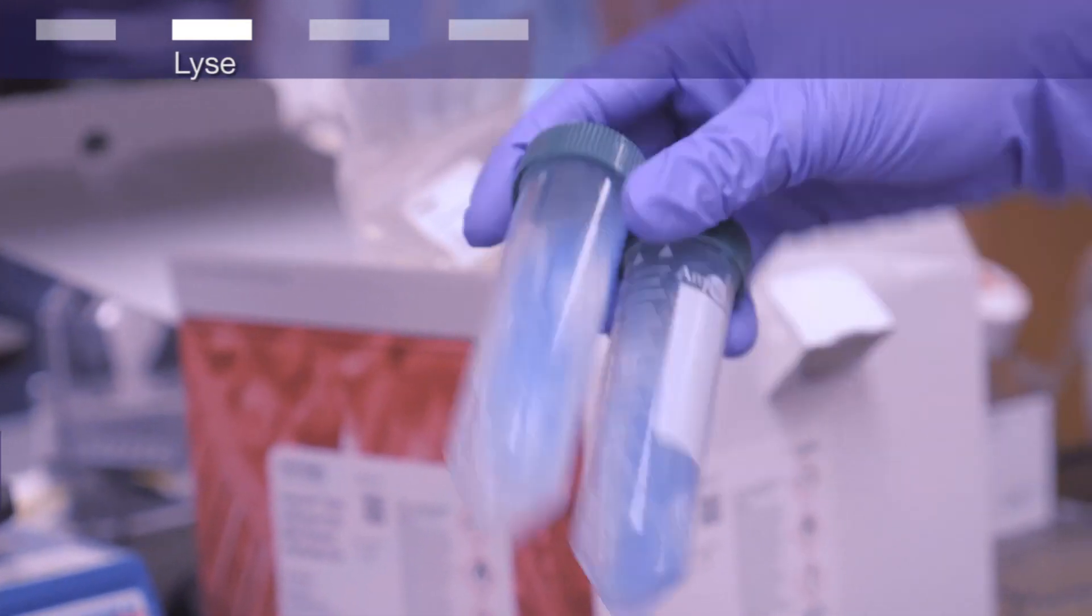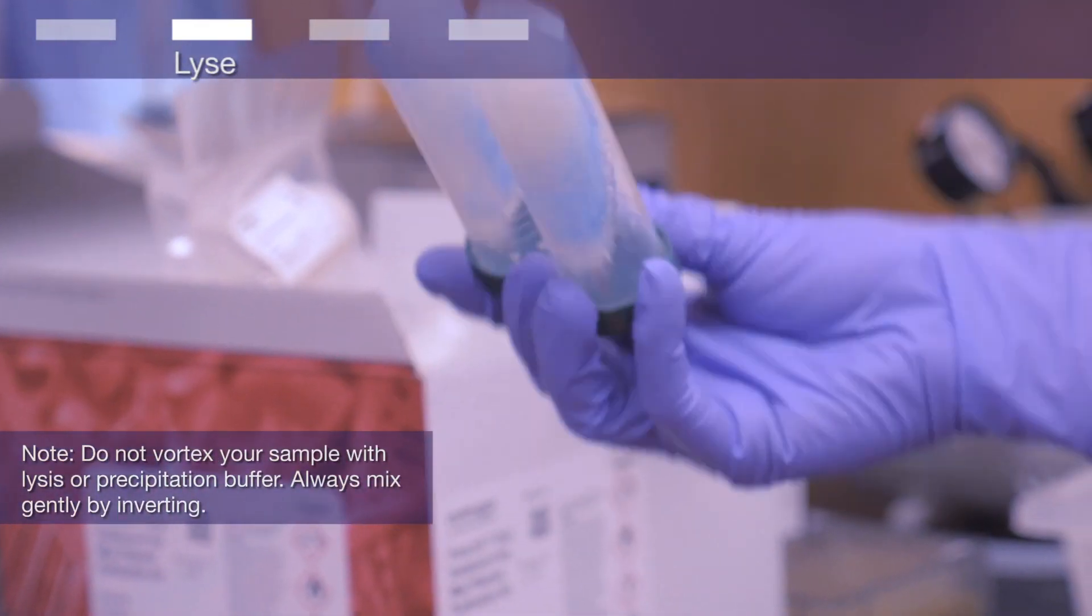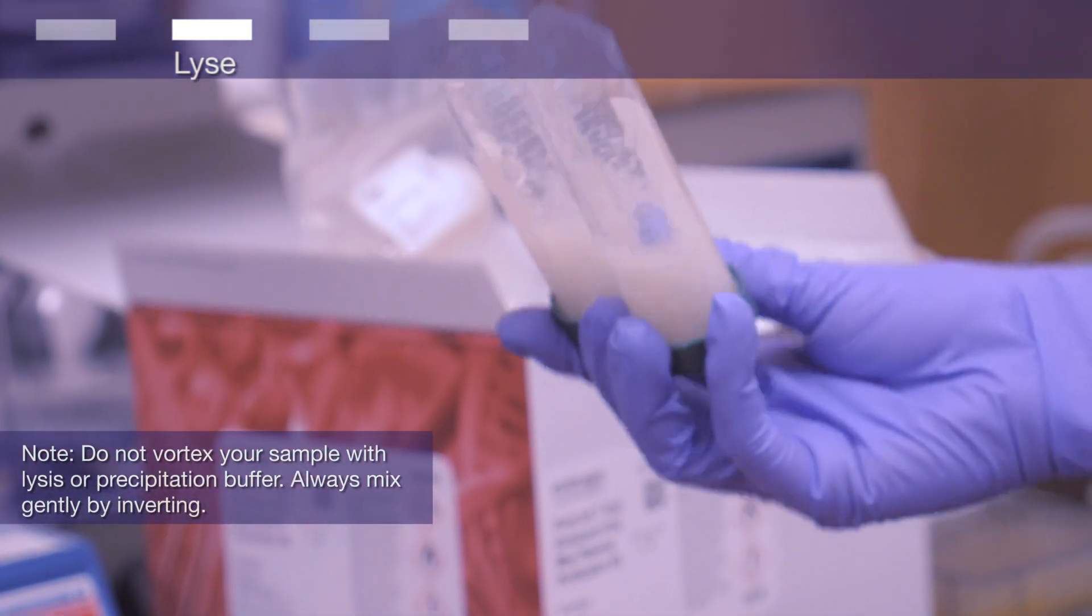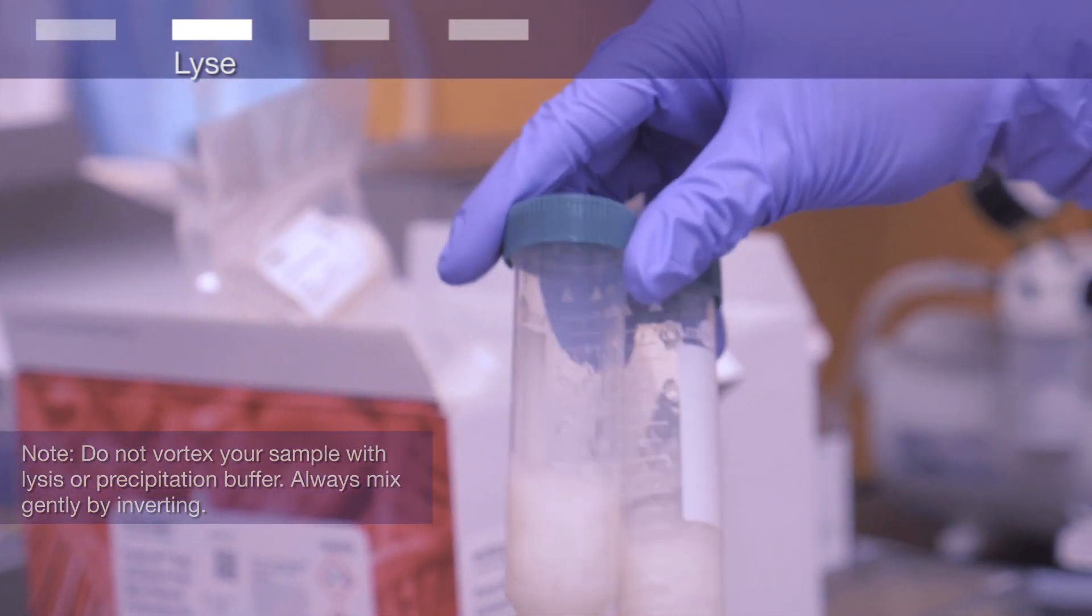Then add 6 milliliters of precipitation buffer and immediately mix by inverting the capped tube until the mixture is homogenous. If using lysis indicator, the solution turns completely colorless.